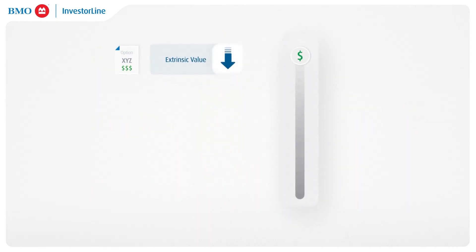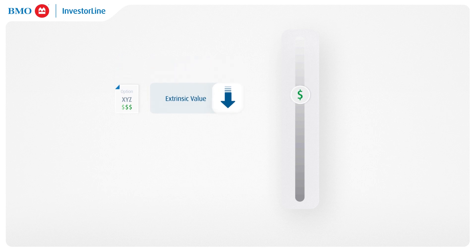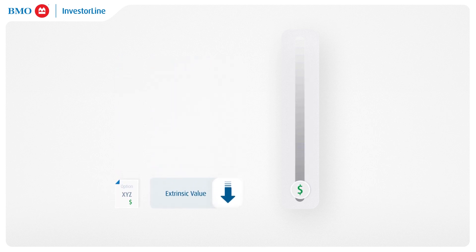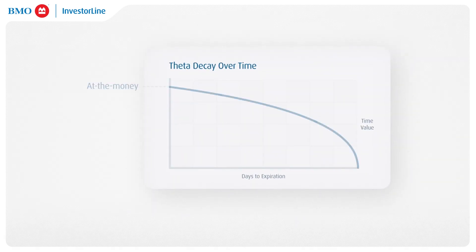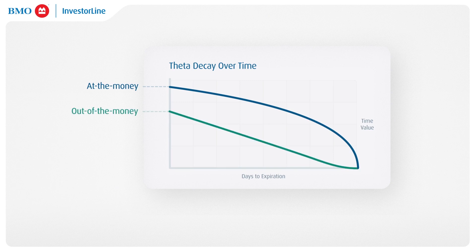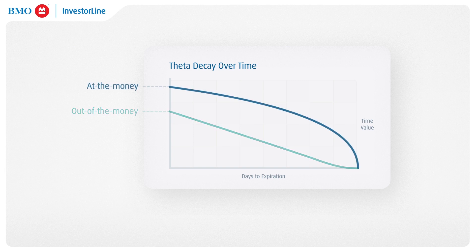Options lose their extrinsic value as they move closer to expiration, meaning there is an increasing amount of extrinsic value to deplete closer to expiration. The relationship between out-of-the-money and at-the-money options' Theta looks similar to this. Notice how out-of-the-money options tend not to have the acceleration of Theta closer to expiration, as there is not much extrinsic value left to deplete, while at-the-money options experience a large amount of Theta acceleration approaching expiration.